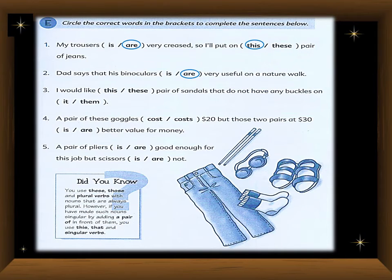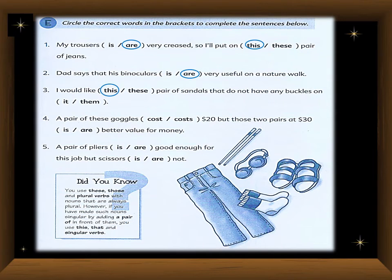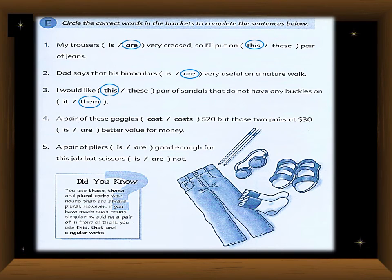Third sentence: 'I would like ___ pair of sandals.' 'Sandals' is obviously plural, but 'pair' decides the verb — use 'this': 'this pair of sandals that does not have any buckles on them.' According to the sandals, we have used 'them' for agreement. Next: 'A pair of these goggles ___.' Because 'pair' is here, 'are' is not used — 'a pair' is singular.